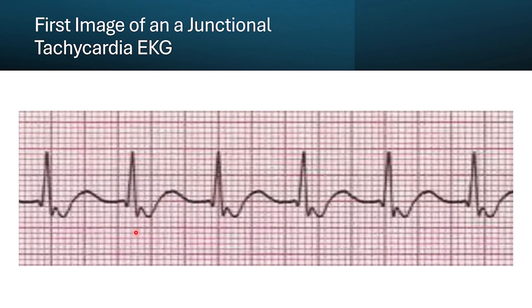Here's another image of a junctional tachycardic rhythm. The QRS complexes are less than 0.12 seconds, and P waves are assumed to be flattened, matching up with each other. Using the box method, the R-to-R interval is about 2.2 to 2.3 boxes. Taking 300 divided by 2.2 gives an extremely high heart rate — probably around 130 to 140 beats per minute.